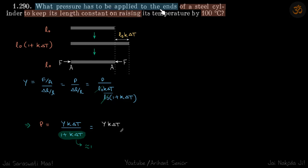What pressure has to be applied to the ends of a steel cylinder to keep its length constant on raising its temperature by 100 degrees Celsius? So we have a rod, and when its temperature increases by 100, it will expand.